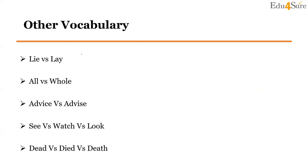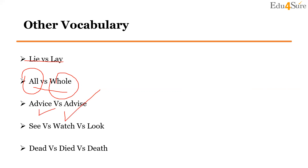Other vocabulary words with similar sounds but different meanings: 'Lie' versus 'lay' — lie means to be in a resting position, lay means to place something. 'All' versus 'whole' — all means everything, whole means entire. 'Advice' versus 'advise' — advice is a noun (suggestion), advise is a verb (to give advice). 'See' versus 'watch' versus 'look' all relate to looking. 'Dead' versus 'died' versus 'death' — these differ in tense. These vocabulary words can be practiced in booksheets.